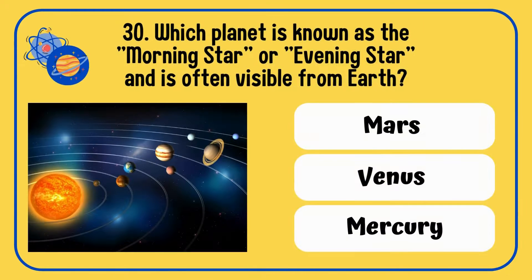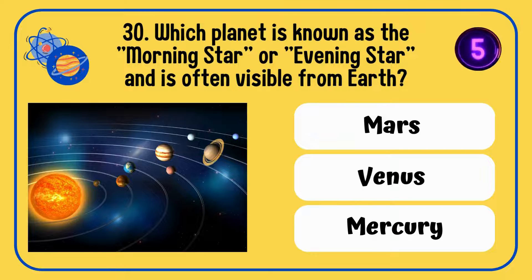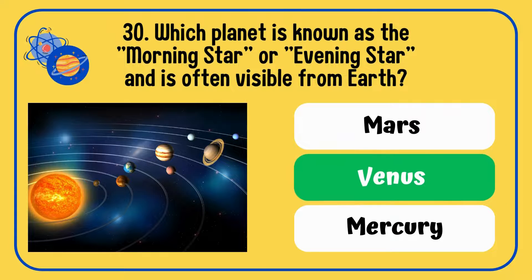Which planet is known as the morning star or evening star and is often visible from Earth — Mars, Venus, or Mercury? The correct answer is Venus.